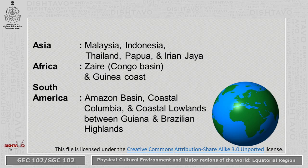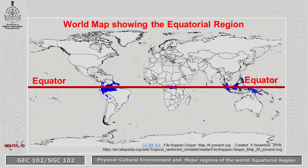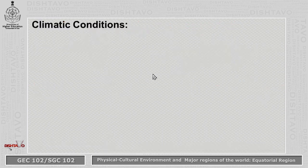This map of the world shows the equatorial region. The red line is the equator, and the blue color or shades of blue indicate the countries falling under the equatorial region. Now let us try to understand what the climatic conditions are like here.